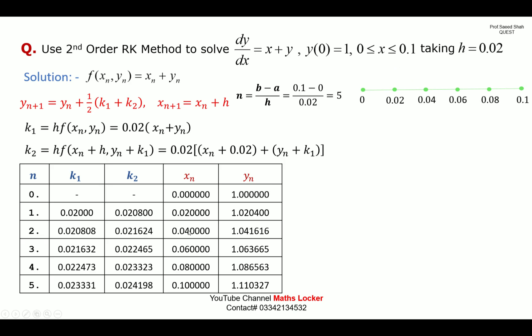The computed solution points are: (0, 1), (0.02, 1.020400), (0.04, 1.041416), (0.06, 1.063665), (0.08, 1.086563), (0.1, 1.110327). This is the solution over the small interval. When taking the graphical solution over this short interval, it will appear as a straight line.